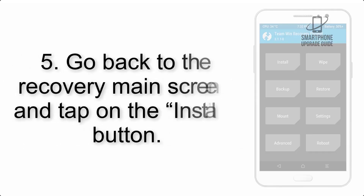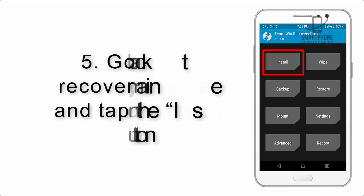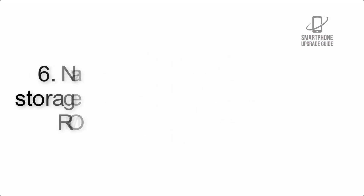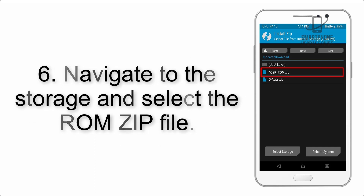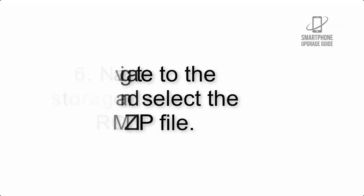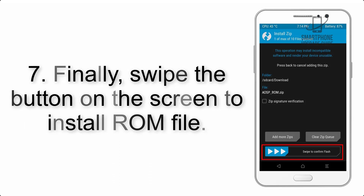Step 5: Go back to the recovery main screen and tap on the Install button. Step 6: Navigate to the storage and select the ROM zip file. Step 7: Finally, swipe the button on the screen to install the ROM file.